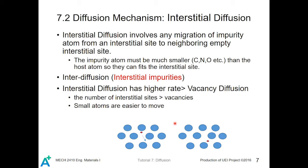Interstitial diffusion can only happen with two or more types of atoms — if there is only one type of atom, the atom size is not suitable for this mechanism. Interstitial impurities are those smaller atoms. Interstitial diffusion also has a higher rate because the number of interstitial sites is much greater than the number of vacancies, and smaller atoms require less energy to move, making them easier to displace.